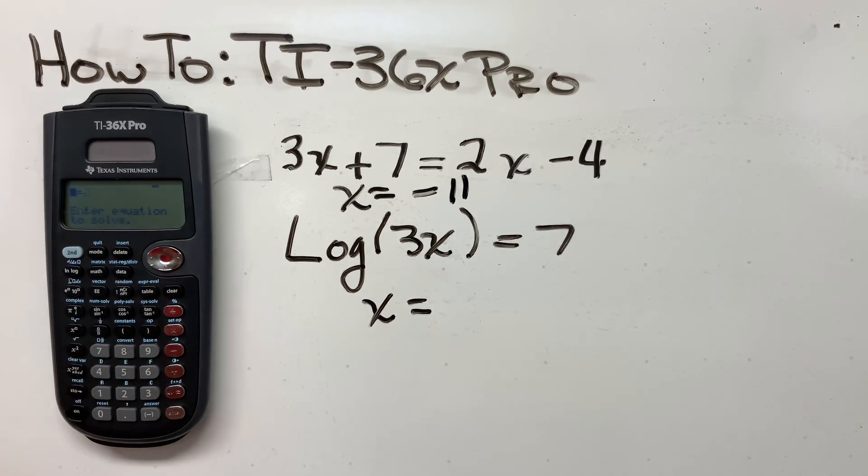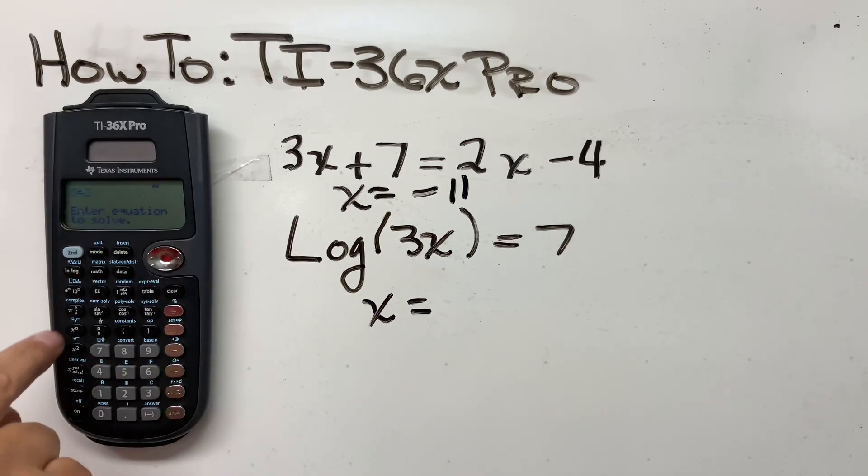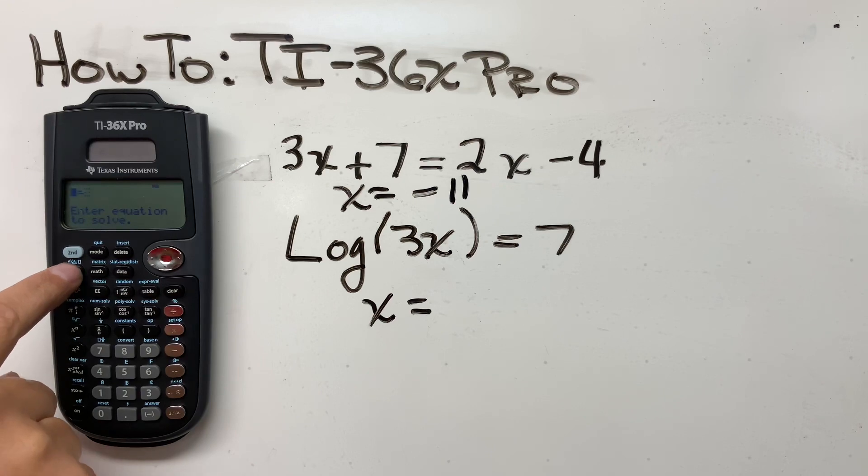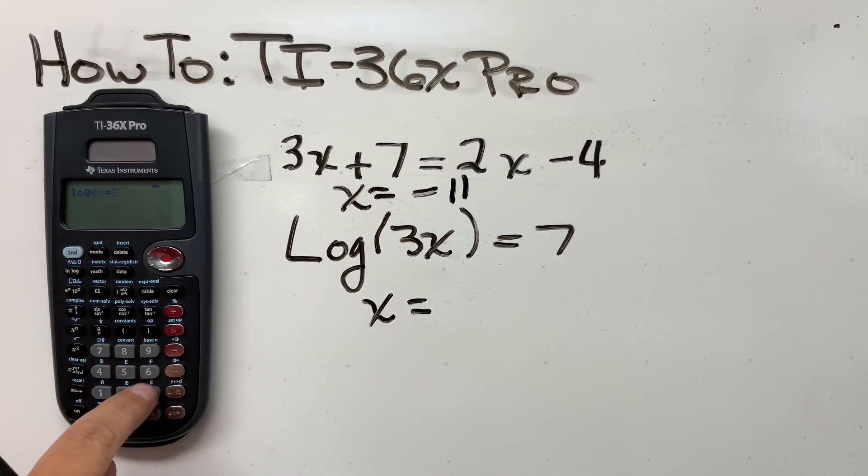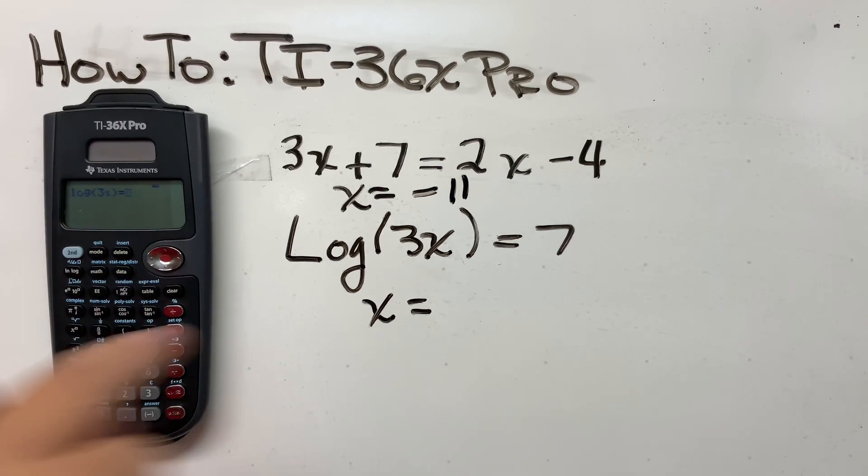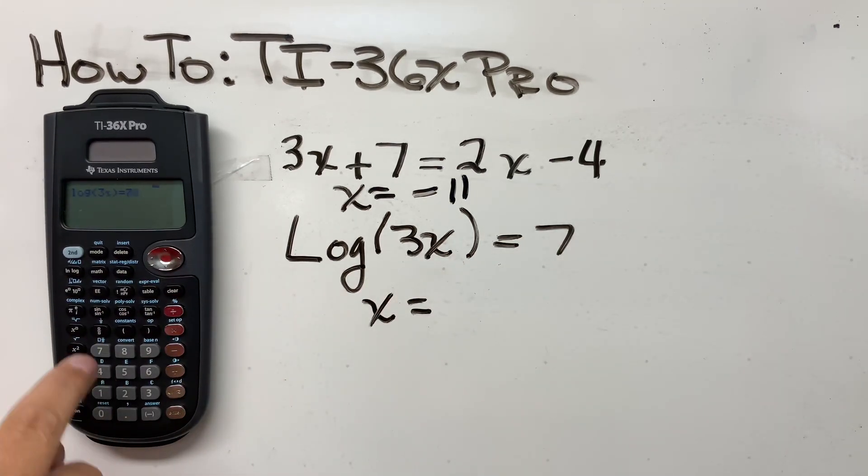We're going to second numsolve log. Here's the log button right under the second button. If you push it once, it has the natural log. Push it again, it'll switch over to the log function. Let's put our 3X in there, close parentheses. Arrow over. Put a seven. And then hit enter.